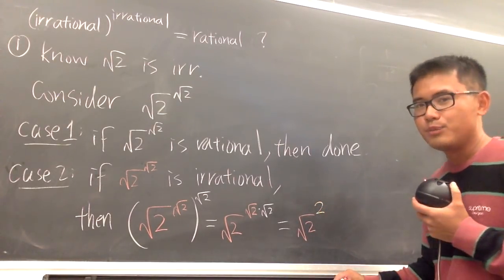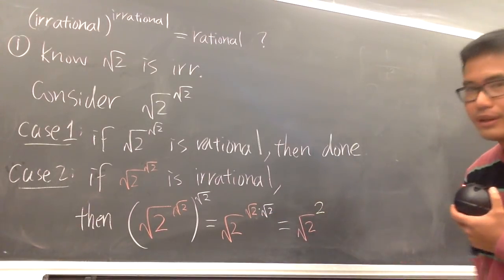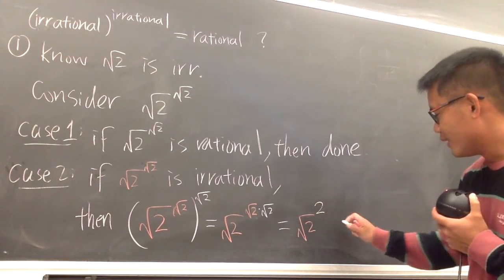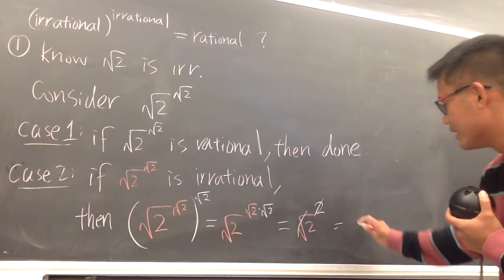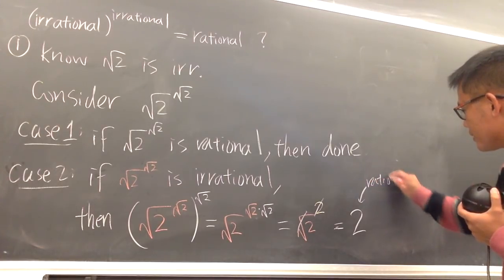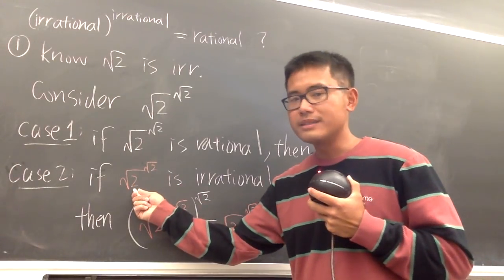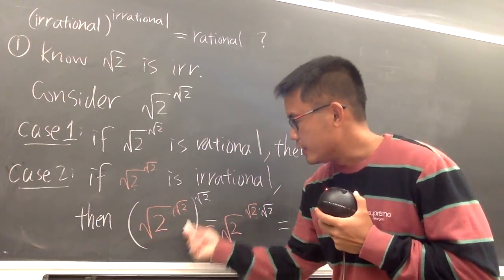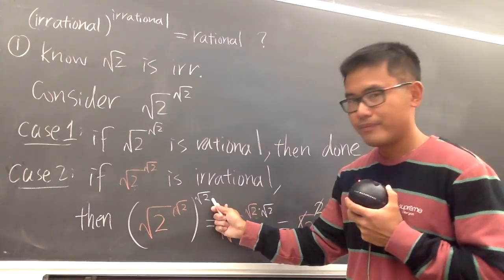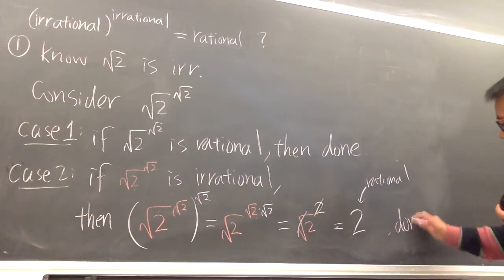I'll put this in yellow to make it special. This times that is 2. So what is square root of 2 to the second power? They cancel out, and we have 2. And as you can see, 2 is definitely rational. So if this was irrational, then we have an irrational number raised to another irrational power, and at the end we got a rational answer. We are done.